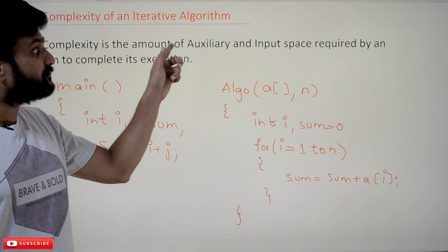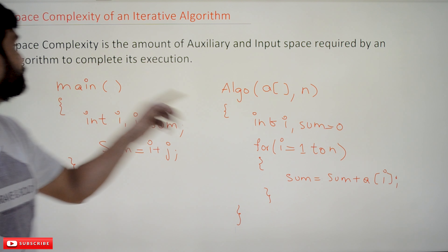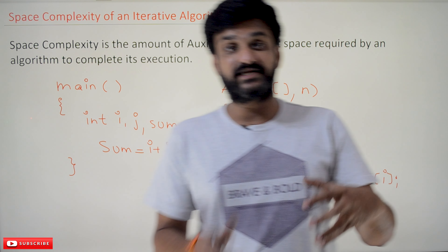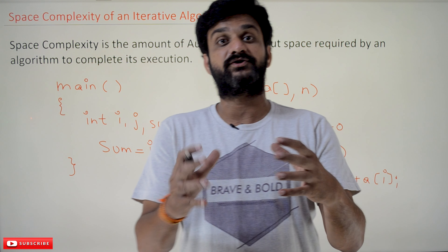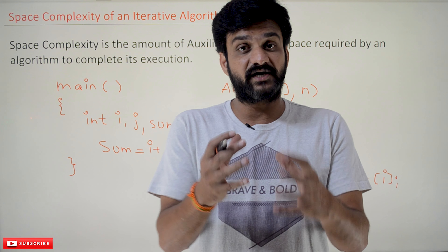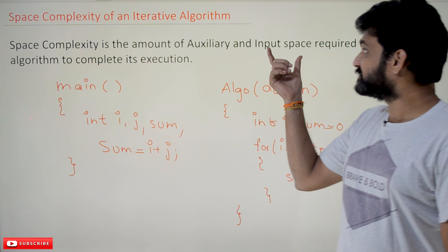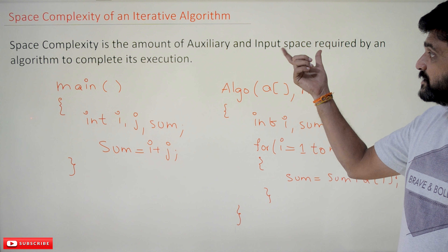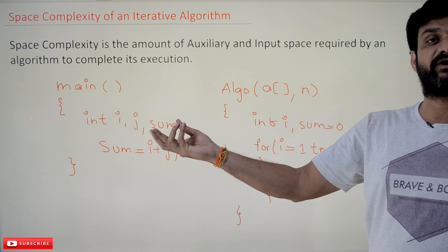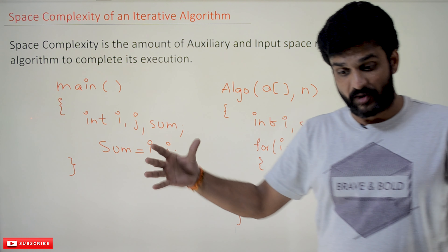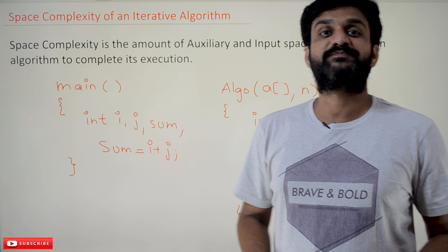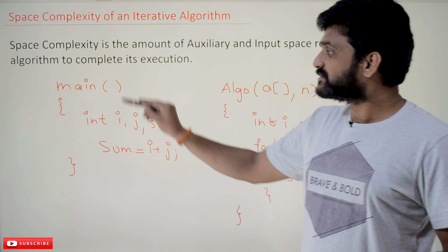Space complexity is the amount of auxiliary space and input space required by an algorithm to complete its execution. Auxiliary space is the extra space needed by the algorithm to produce its output. Input space is the amount of space required by the inputs to that algorithm. The combination of auxiliary space and input space is what we call the space complexity of an algorithm.